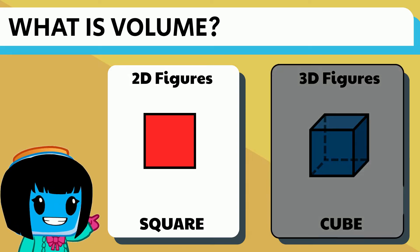So a square is two-dimensional because it only has two dimensions, height and length.